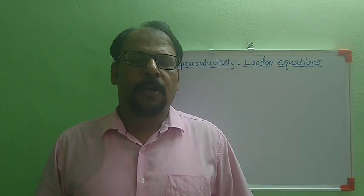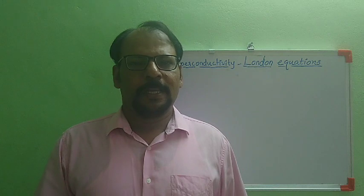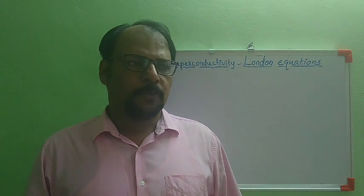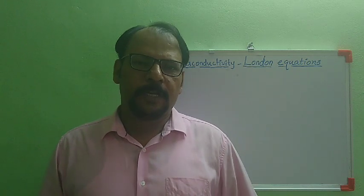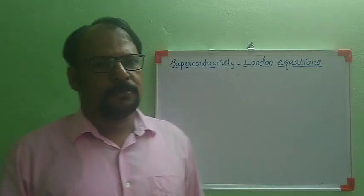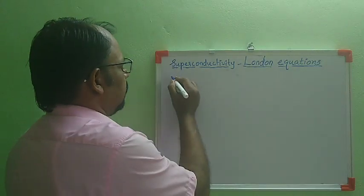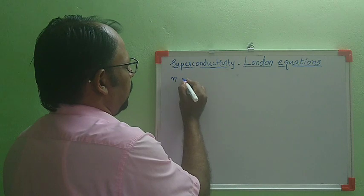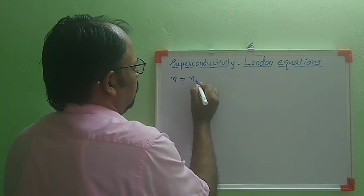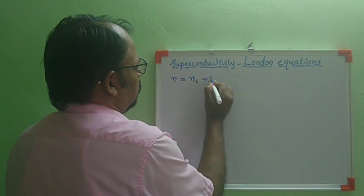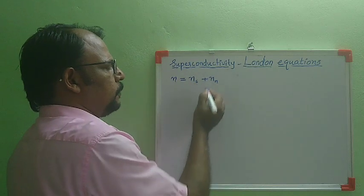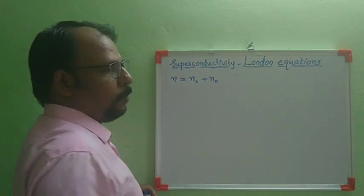In the two-fluid model proposed by Gorter and Casimir, they assumed that there are two types of electrons in a superconductor: normal electrons and super electrons. According to the two-fluid model, the total electrons can be expressed as super electrons plus normal electrons. Ns represents the number density of super electrons and Nl represents the number density of normal electrons.